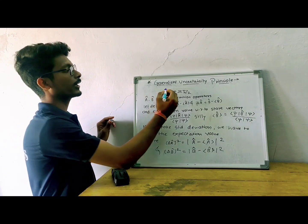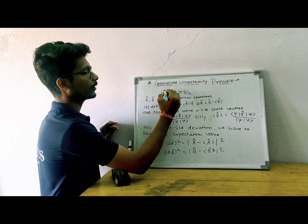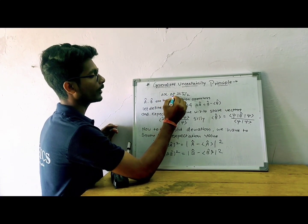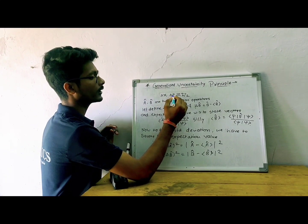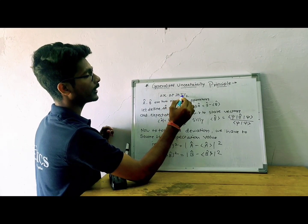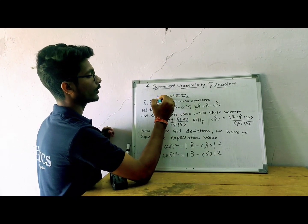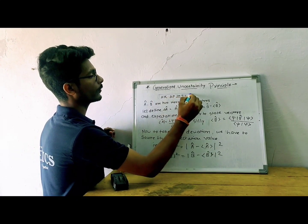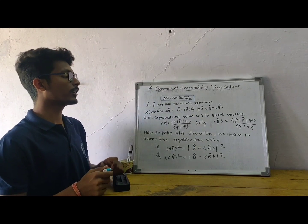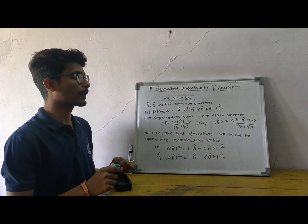This is given as del x — the position representation — and del p — the momentum representation. This is greater than or equal to h-bar divided by 2. This is the Heisenberg uncertainty principle.